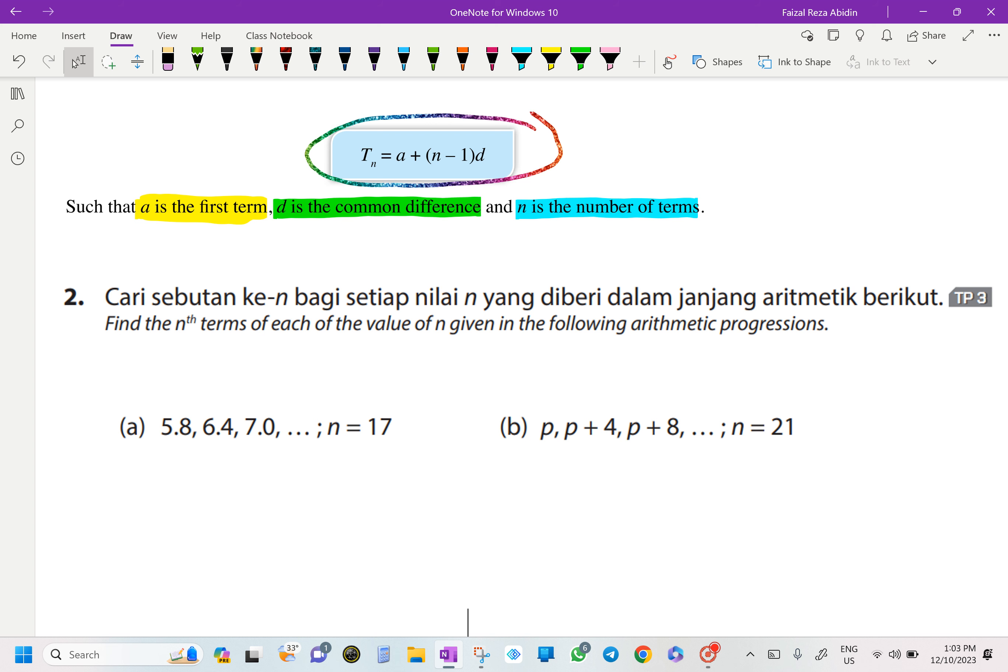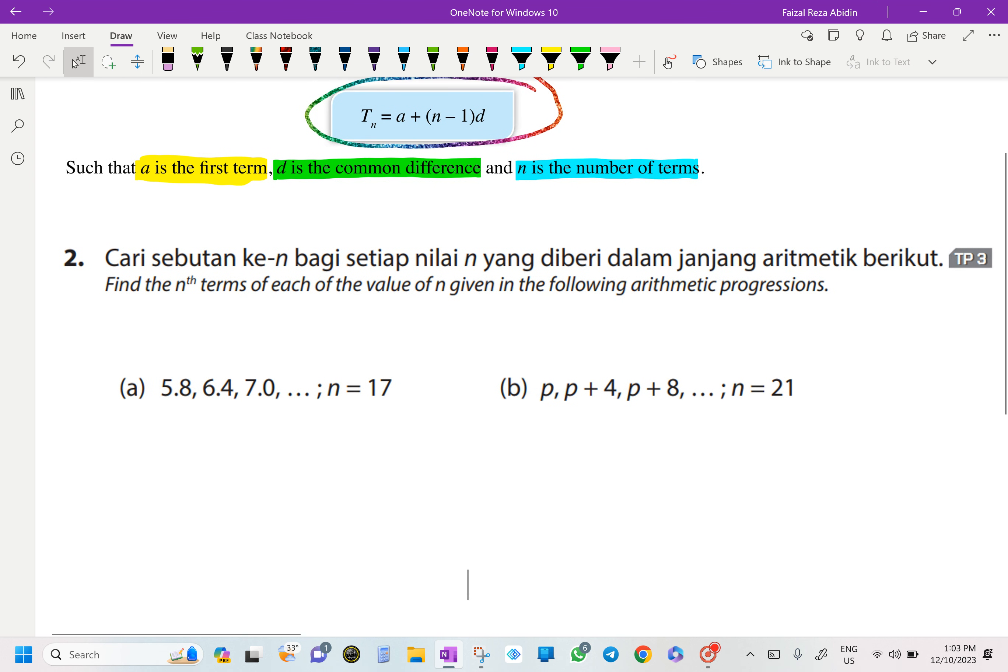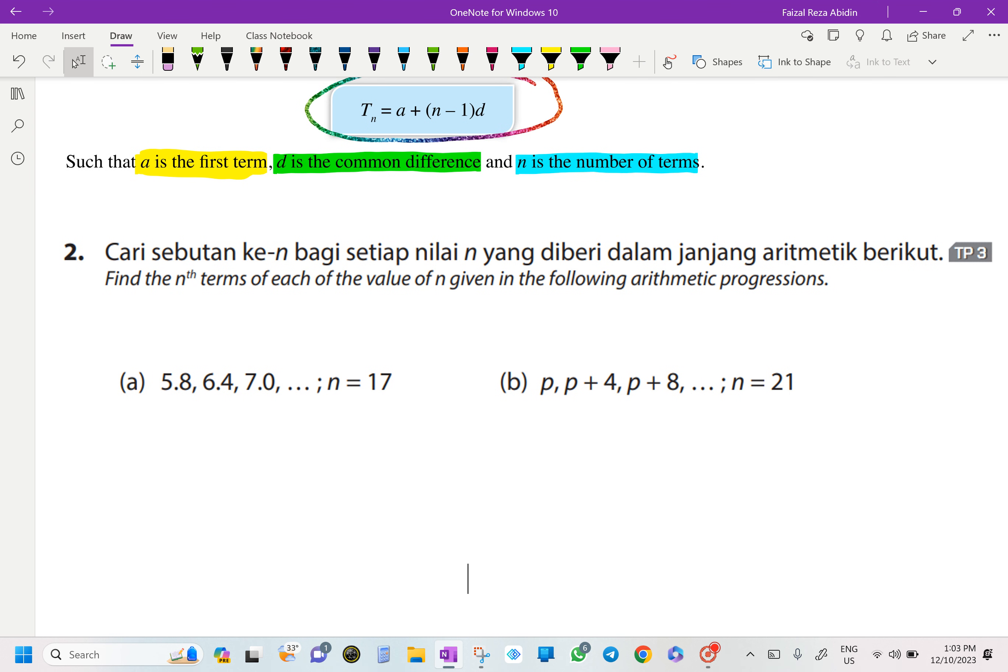So if you look at our number 2 in our PBD book, page 69, find the N terms of each of the value of N given in the following arithmetic progression. Okay, so we go for our first one. It's given already that our N here is going to be 17.